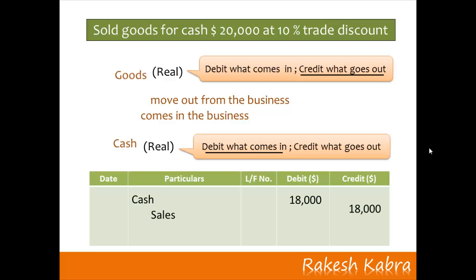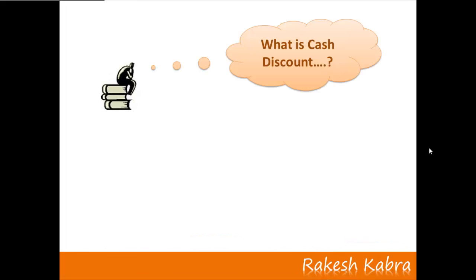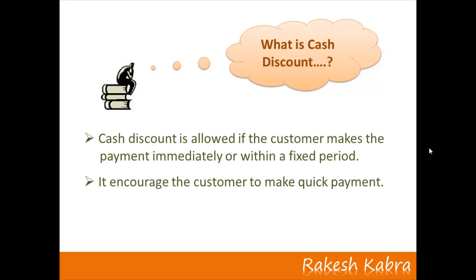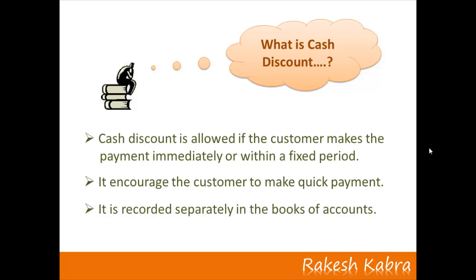While passing the journal entry, we debit cash account and credit sales account in place of goods account with the net amount of $18,000. The final conclusion about trade discount is that it is simply subtracted from the print price and the transaction is recorded only with the net amount. Now, cash discount is allowed to the customer if he makes payment immediately or within a fixed period — it encourages quick payment and is recorded separately in the books of accounts.